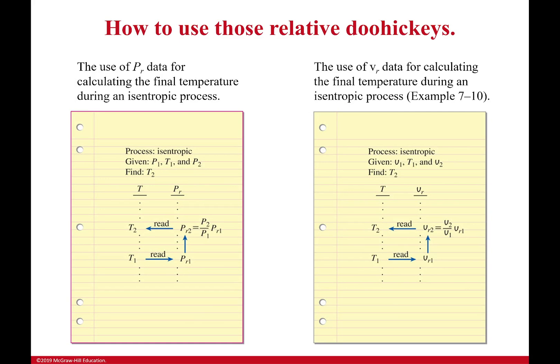So if in a problem you're given a ratio of pressures, it says the pressure increases threefold. Well, you can look up your temperature. You can find your relative pressure. And then to find your final relative pressure, you just multiply it by the ratio of pressures. I have pressure relative 1. I multiply it by 3 because I said it was 3 times greater pressure. And I can use that value to then get my final temperature.